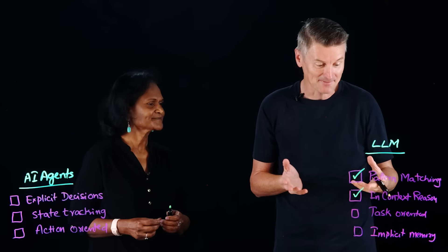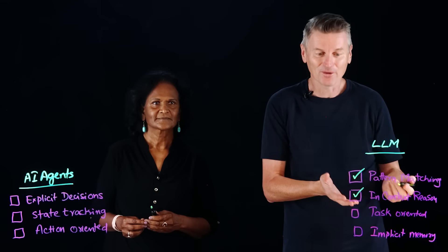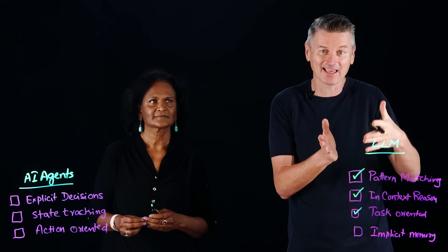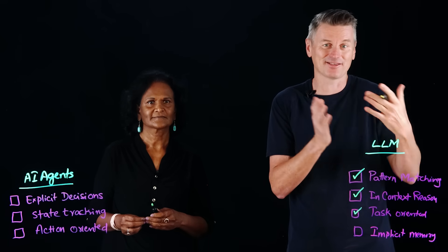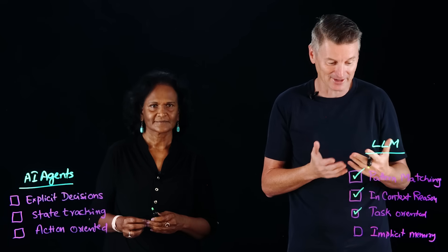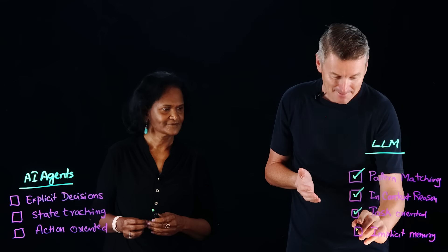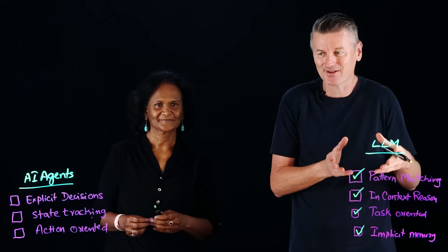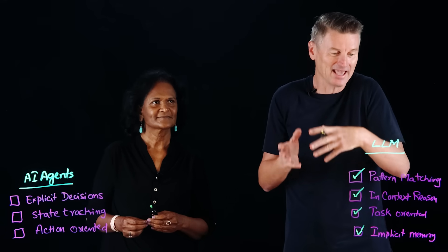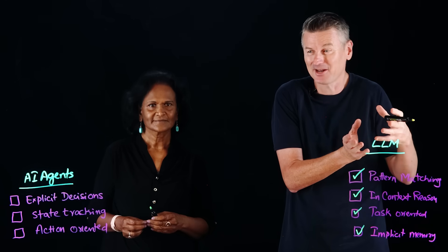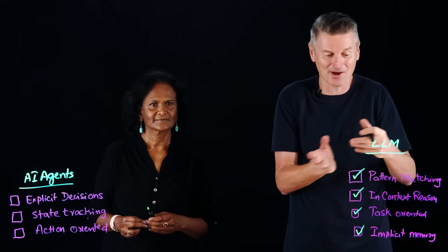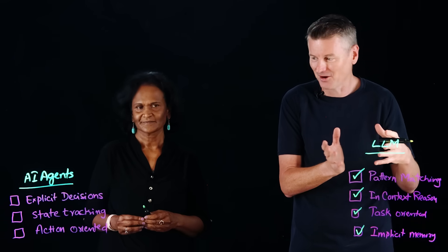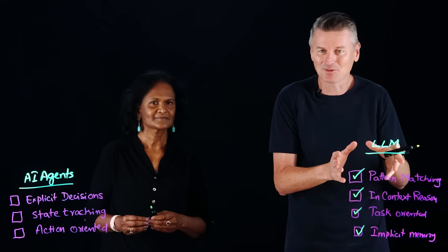LLM reasoning is also task-oriented — we are performing reasoning on a particular singular task, whether that is translation, summarization, or whatever it is. And it's implicit memory — it's non-persistent. The conversation in one chat window will inform reasoning, but it's not going to affect another chat window once we close it. The reasoning doesn't transfer over. That's how LLMs work.